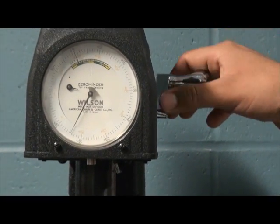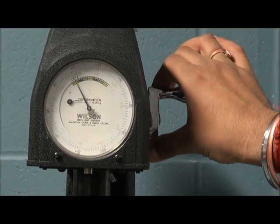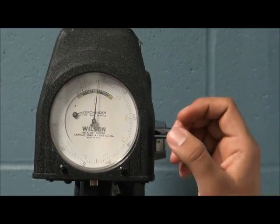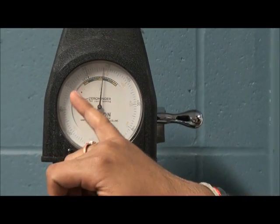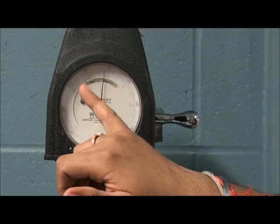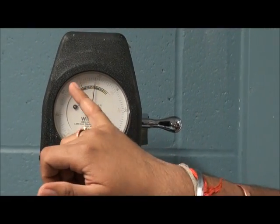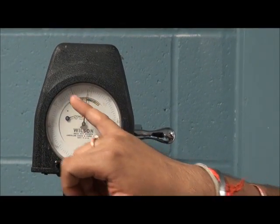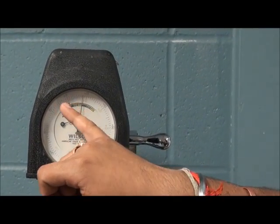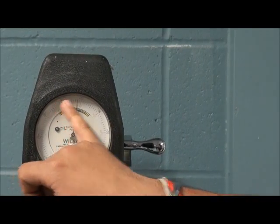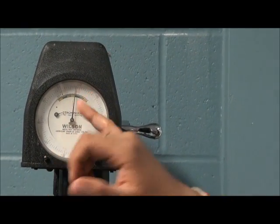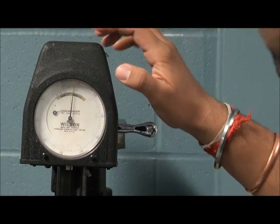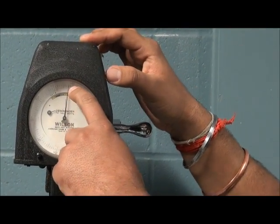Our next step is to release the major load. Now we can see that if the bigger pointer drops to this point from this cycle the material is softer. Now we can see that the bigger pointer is moved towards the right side, then our material is harder. And the reading of this scale is on the Rockwell hardness scale.